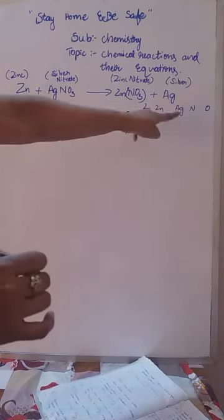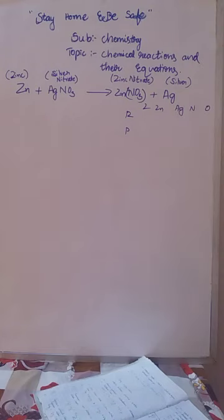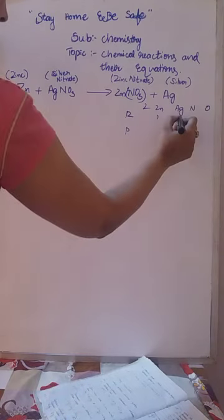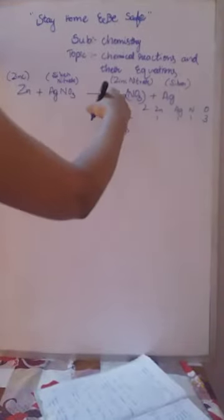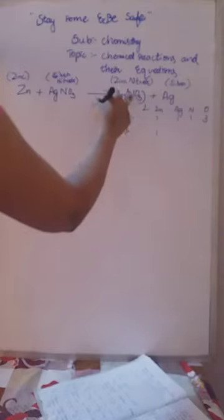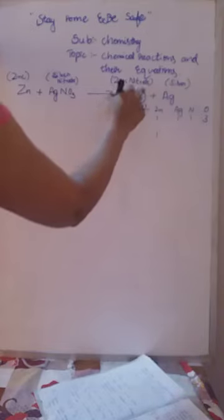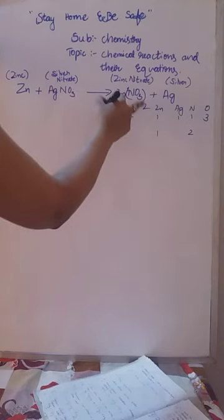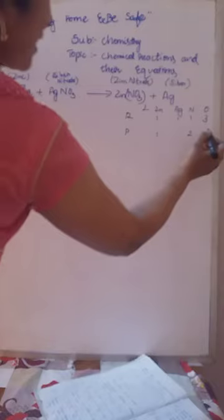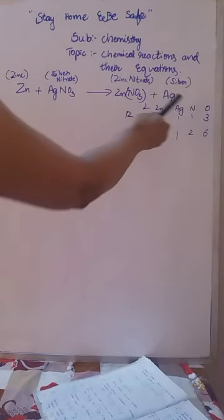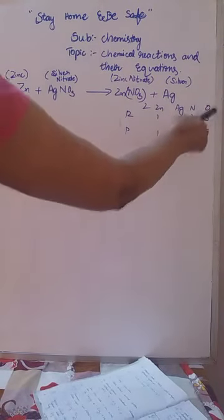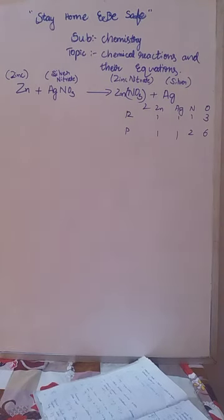On the reactant side: one atom of zinc, one atom of silver, one atom of nitrogen, and three atoms of oxygen. On the product side: one atom of zinc, two atoms of nitrogen, six atoms of oxygen (3×2), and one atom of silver. So zinc and silver are already balanced. The remaining elements that need balancing are nitrogen and oxygen.